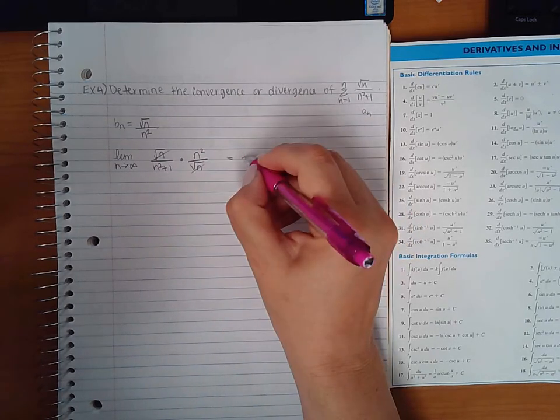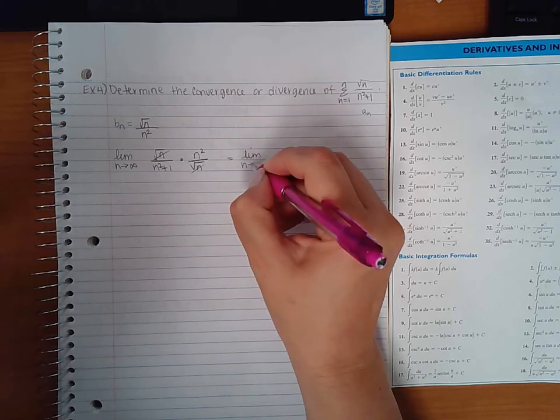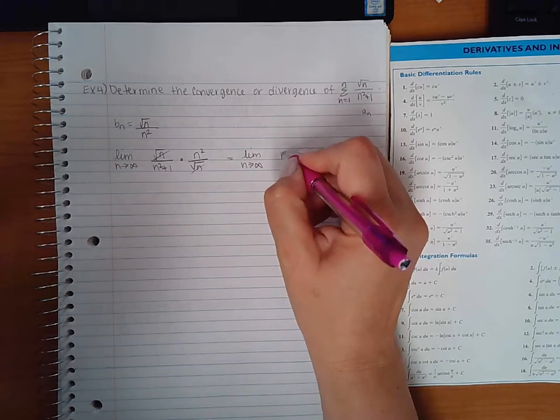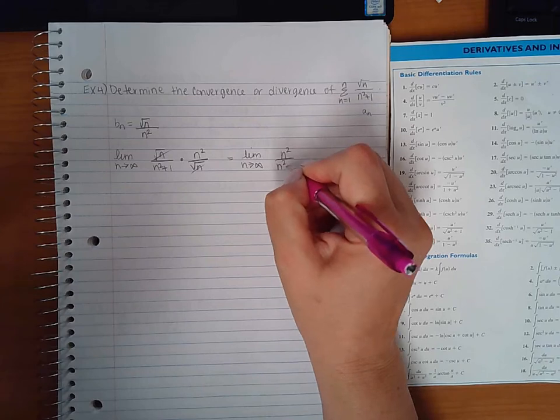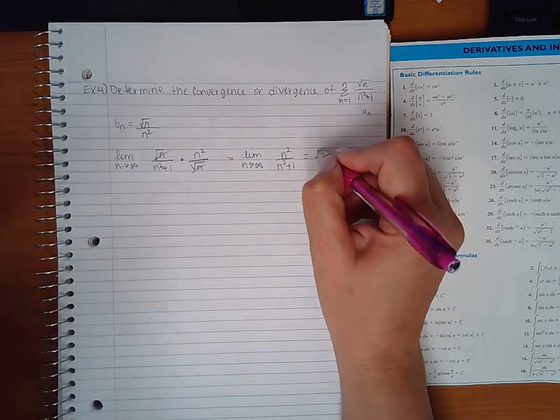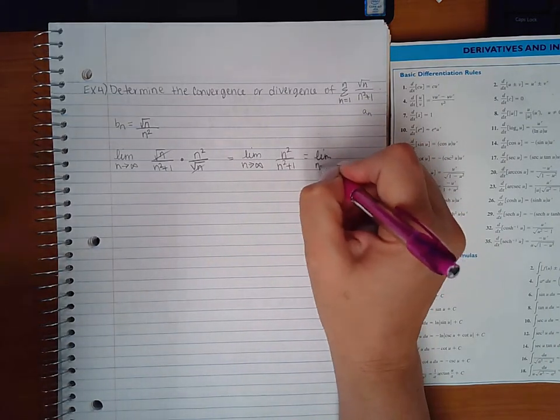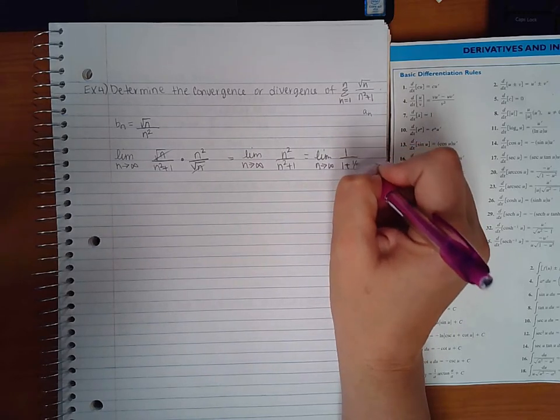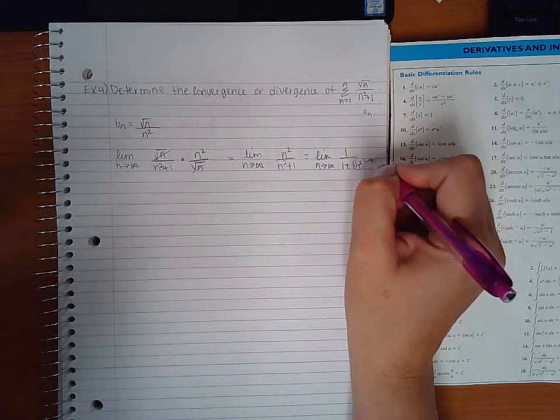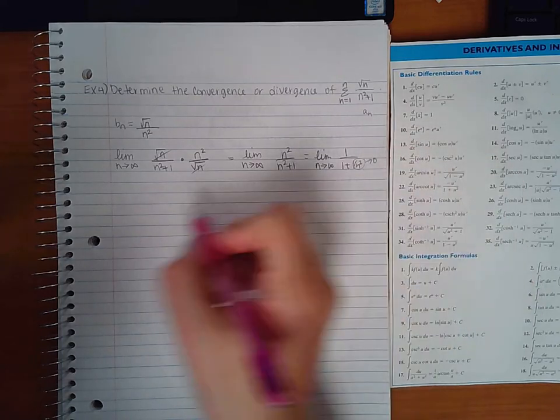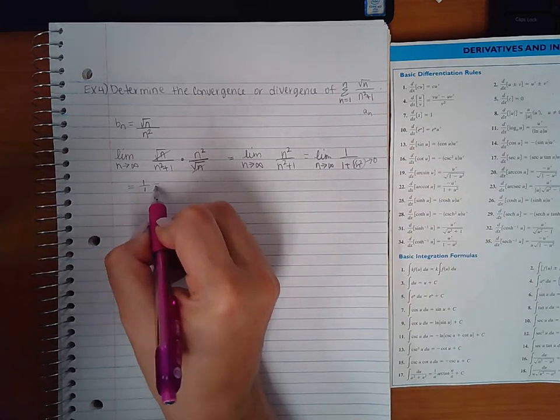And the square roots will cancel. I'll get the limit as n goes to infinity of n squared over n squared plus 1, which if I reduce everybody by n squared, I get 1 over 1 plus 1 over n squared. That guy will go to 0, which means I end up with 1 over 1, which is equal to 1.